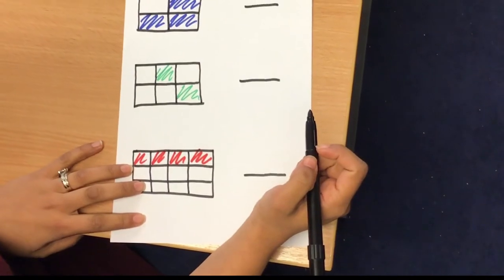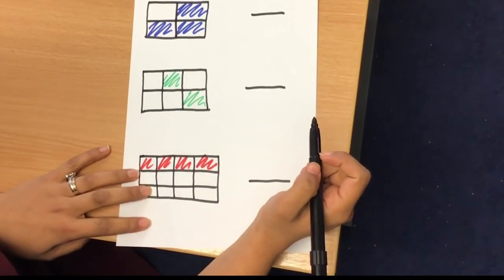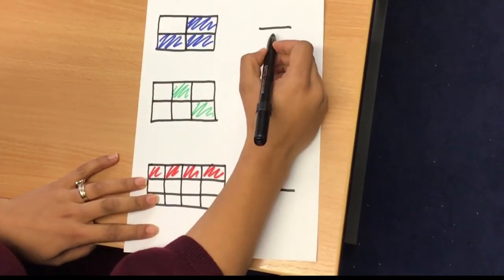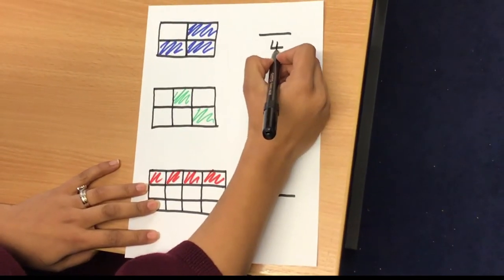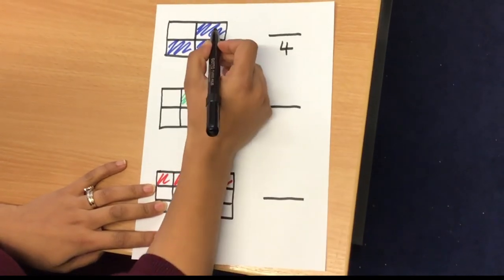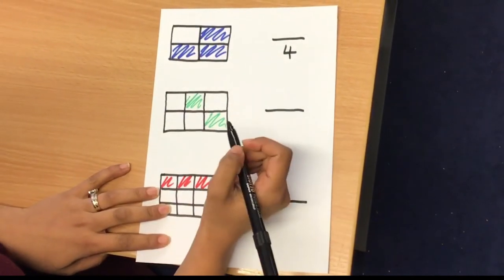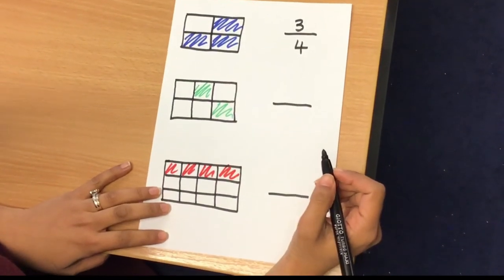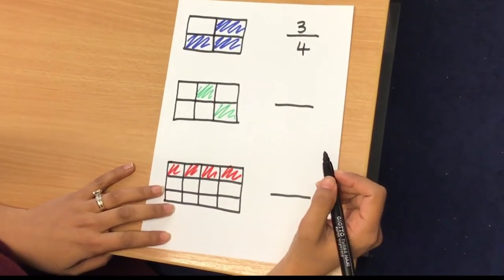Okay, let's look at what the following fractions represent. I have one, two, three, four parts in total. So four is my denominator. I have one, two, three shaded. Therefore, my fraction is three quarters or three fourths.